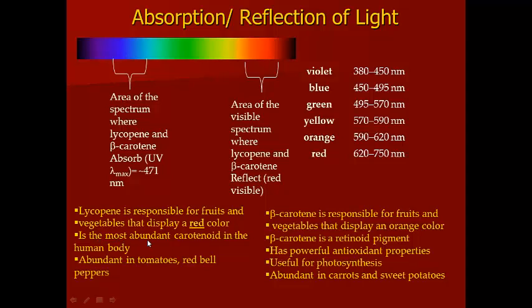Lycopene is the most abundant carotenoid in the human body, and it's abundant in tomatoes, red bell peppers, watermelon — just about any of your red fruits or vegetables are going to contain lycopene. Tomatoes are probably your best source.